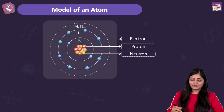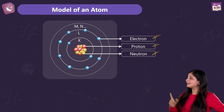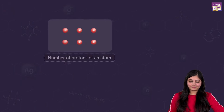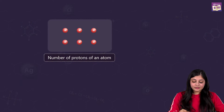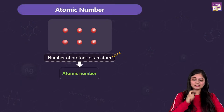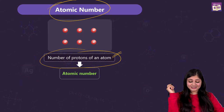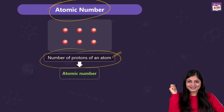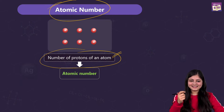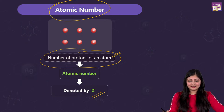Now look at this model of an atom — we know electrons are revolving, protons are in the nucleus with a positive charge, and neutrons are also there (the yellow spheres). Let's focus on protons first. The number of protons is very important because I'm introducing a new term: atomic number. Atomic number is nothing but the number of protons of an atom. This is denoted by the letter Z.